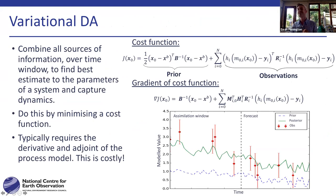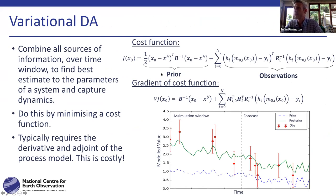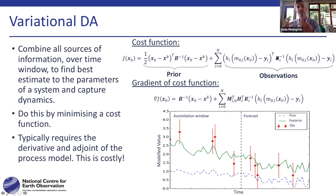Just a little bit about variational data assimilation — we're really just concerned with minimizing a cost function with two terms: one is the prior term, trying to minimize the distance to some prior guess of the parameters or state variables given a background error covariance matrix, and one is a term trying to minimize the distance to some observations given an observation error covariance matrix.